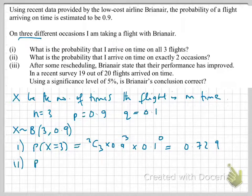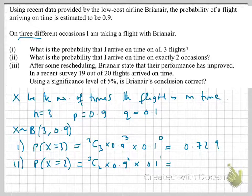Similarly, for x equals 2, we'll have 3 choose 2 times 0.9 squared times 0.1 to the power of 1, which gives us 0.243.